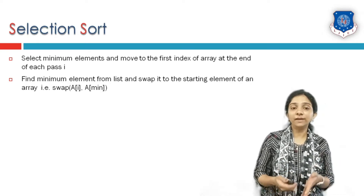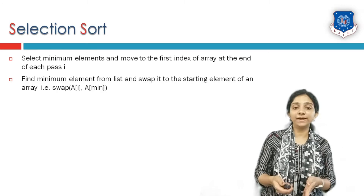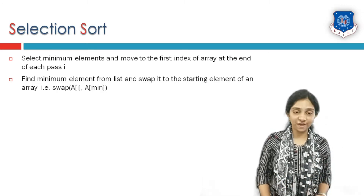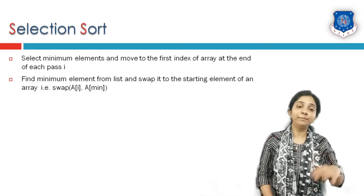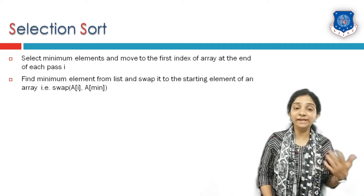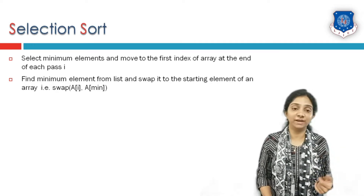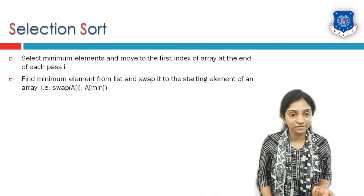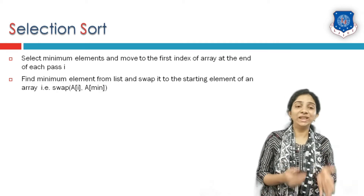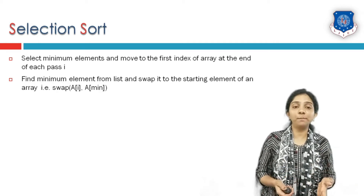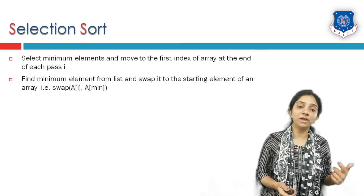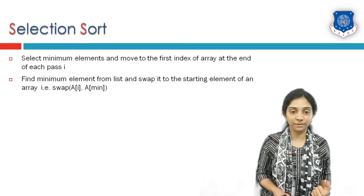The starting element where the element should get sorted is represented by index i, and min index is the index of the element which is minimum from the list. They are swapped with the help of the statement swap of a[i] comma a[min].